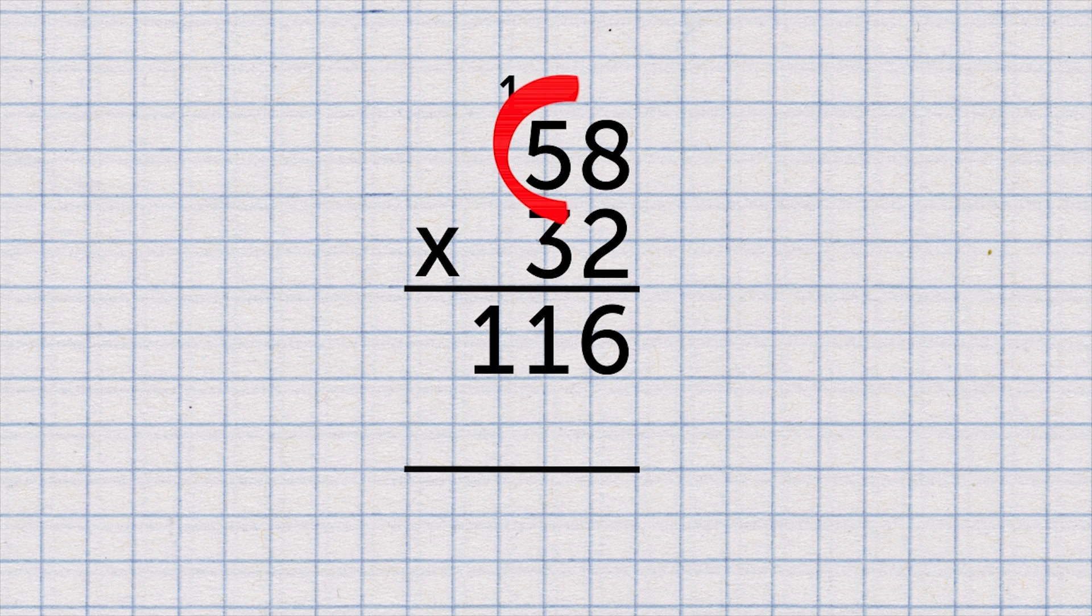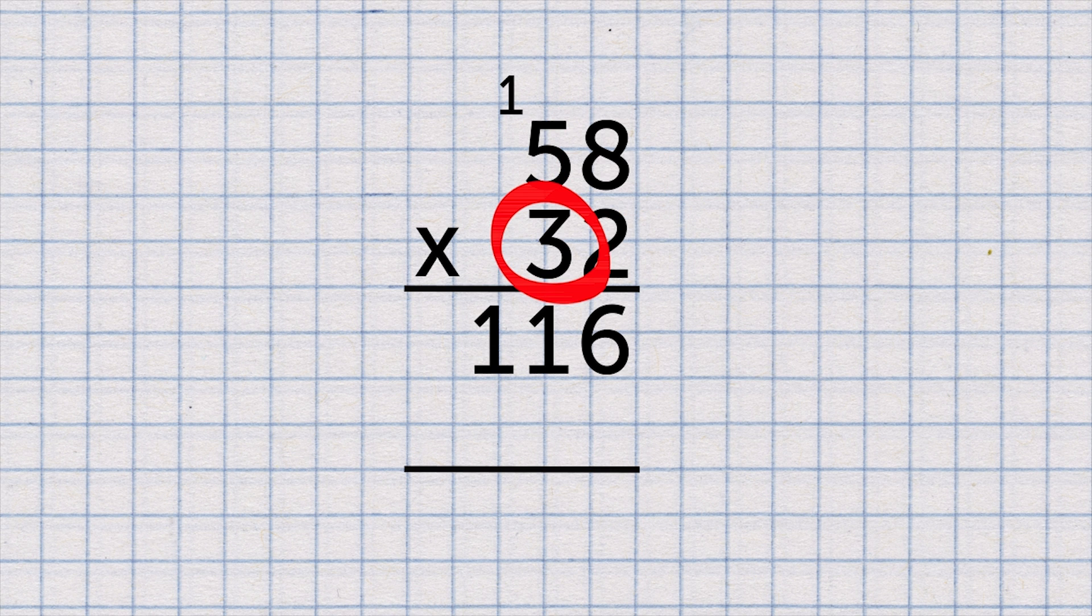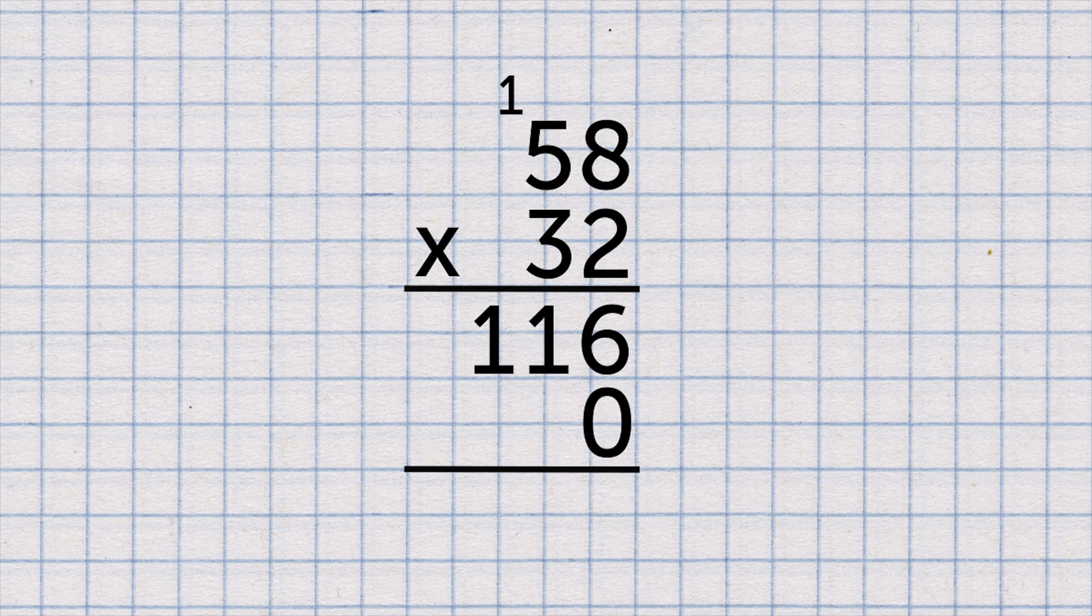We've multiplied 58 by 2. Now we still need to multiply 58 by 30. 3 times 8. Because the 3 is really 30, first put a 0 in the ones column. The 0 pushes all the digits across one place to the left, meaning they're 10 times bigger.